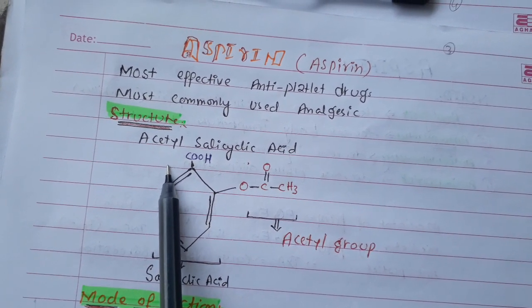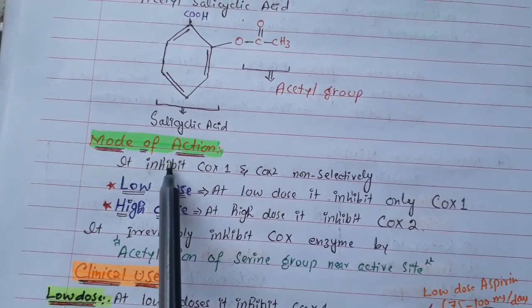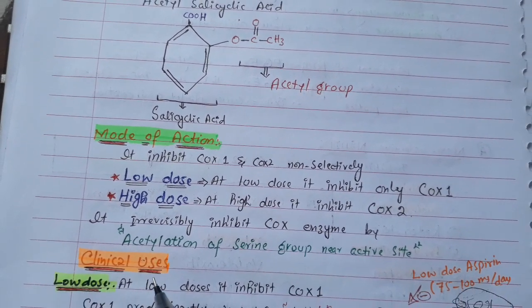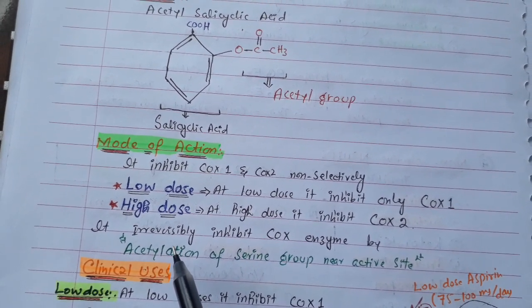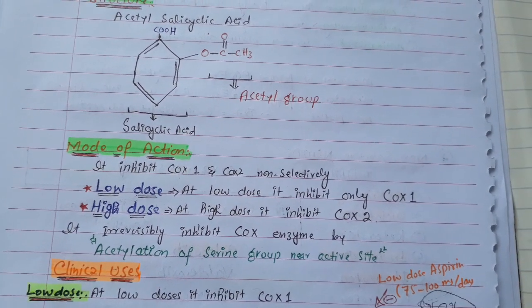The side effects and mood of action of aspirin are based on the acetyl group. Aspirin's mechanism of action is that it inhibits COX-1 and COX-2 non-selectively. It actually inhibits the COX enzyme irreversibly by acetylation of the serine group near the active site. The acetyl group attaches to the serine group — this is called acetylation.